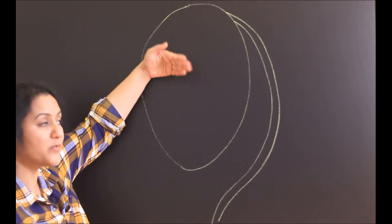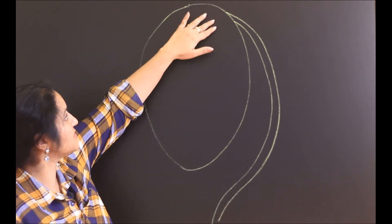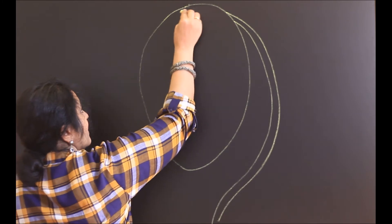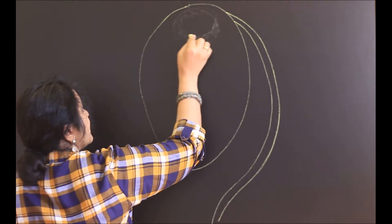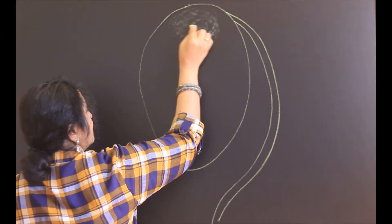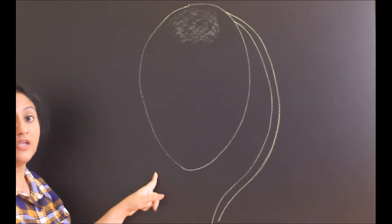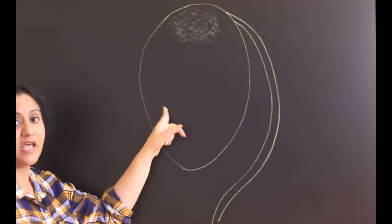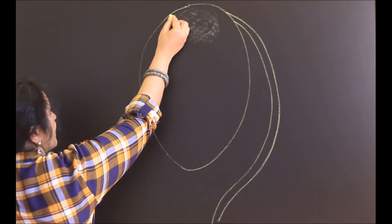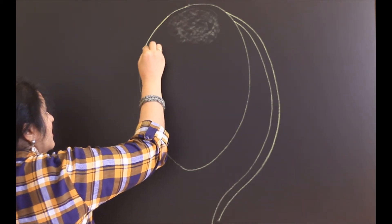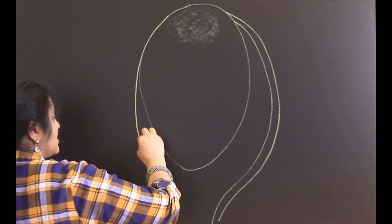Now, later as development progresses, the base of nucellus, this region is called as chalaza and later the chalaza will start forming two integuments, an outer integument and an inner integument. So from chalaza, integuments develop.